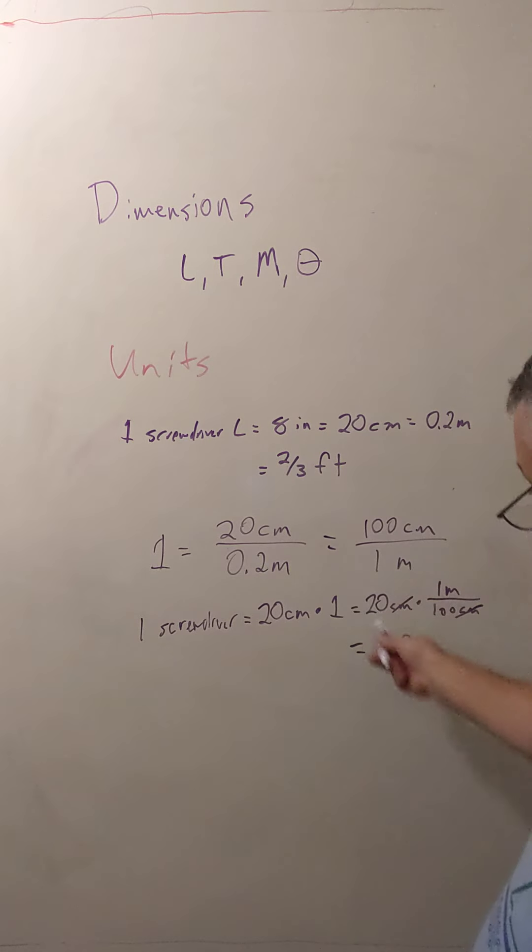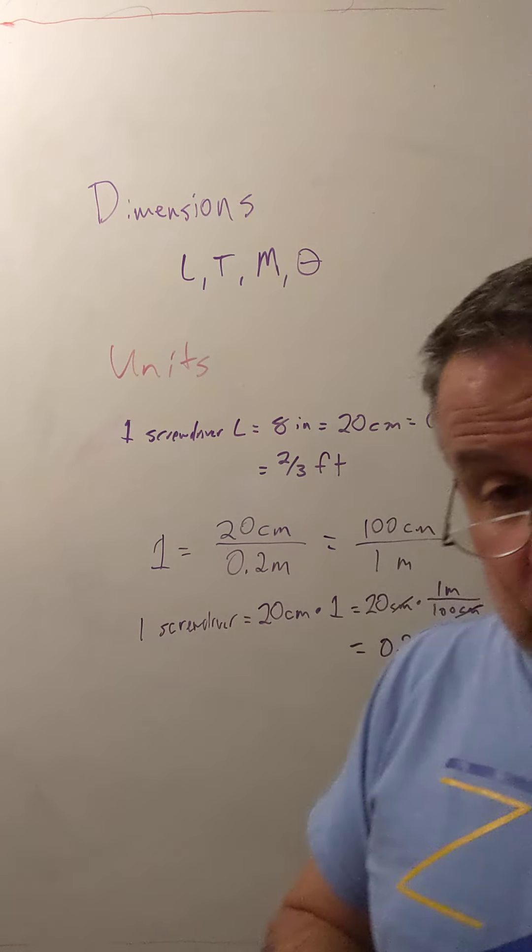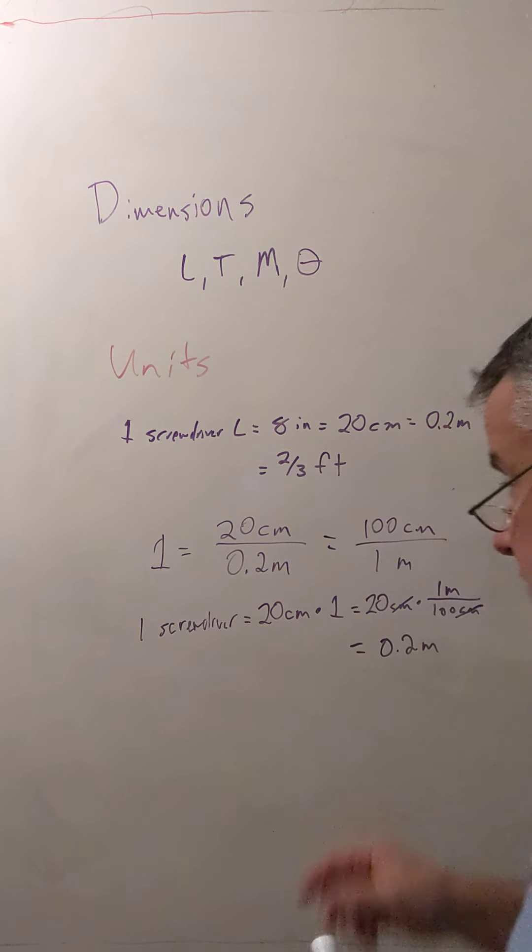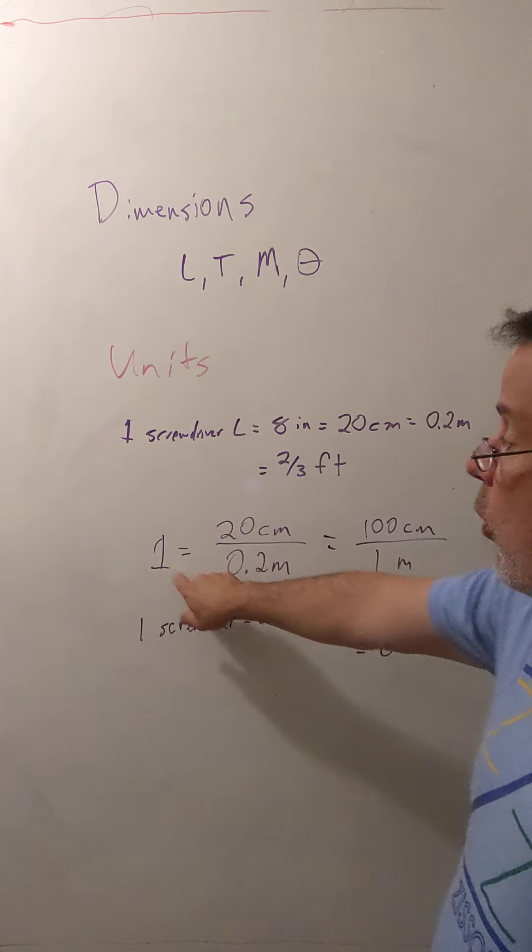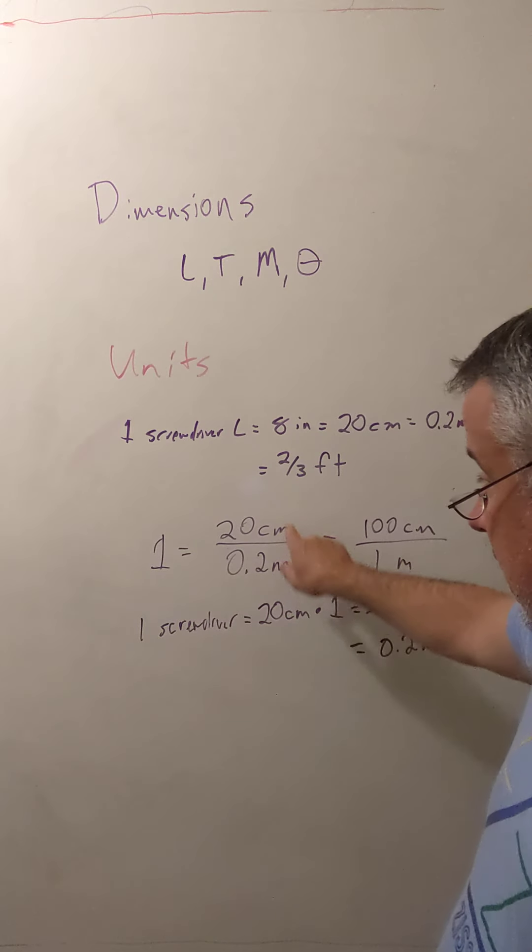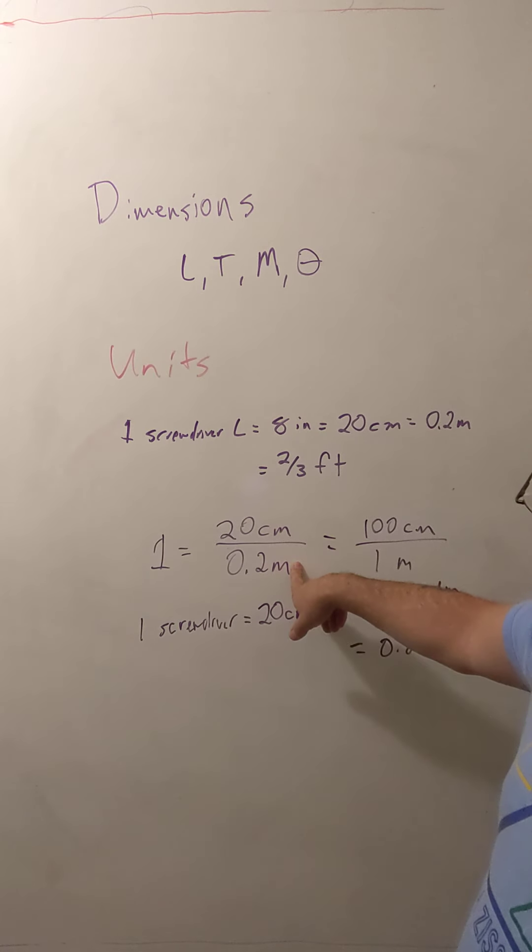So this little fancy kind of 1 calculation is the way that we switch around from one set of units to another set of units. But we always have to be careful to be dimensionally consistent. And notice that the 1 doesn't have any dimensions at all. That's because this side has dimensions of length divided by dimensions of length.